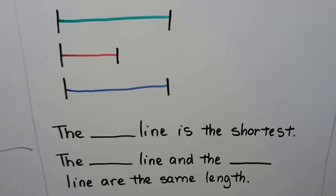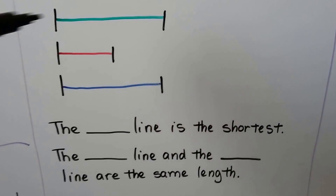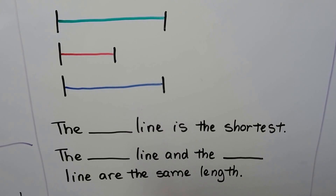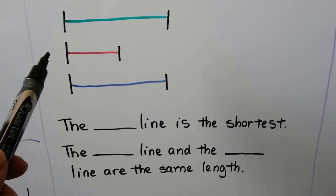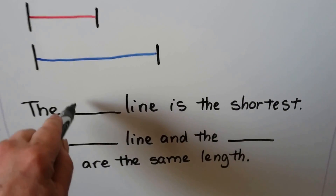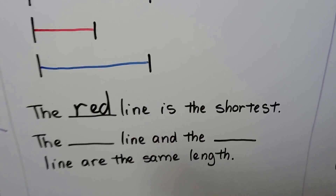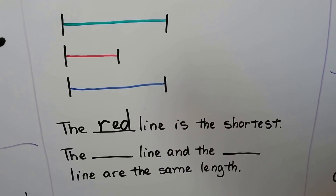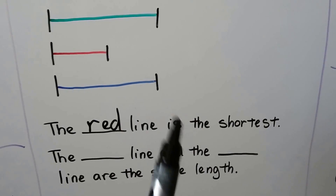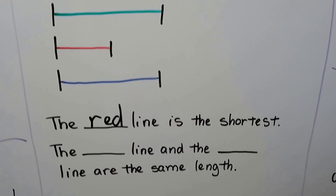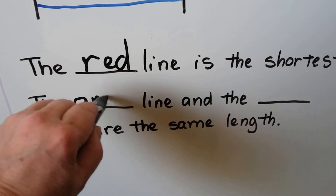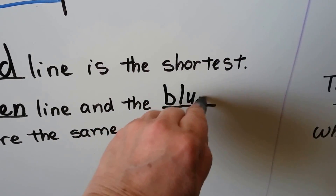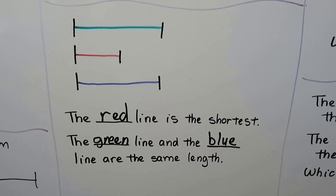Let's see if we can fill in these blanks. The blank line is the shortest. We have a green line, a red line, and a blue line. Which line is the shortest? We can tell because it's the one that looks the smallest — the red line is the shortest. The blank line and the blank line are the same length. The green line and the blue line end at the same place, so they're the same length. The green line and the blue line are the same length, and the red line is the shortest.